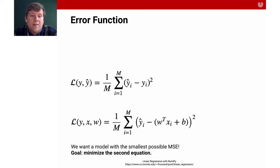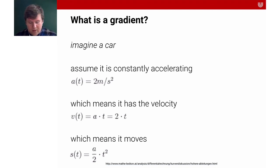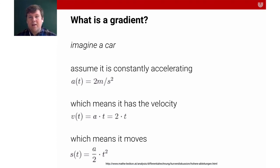To minimize the loss function we take a gradient. Just imagine a car: there's an acceleration function a = 2 meters per second squared. The acceleration changes the velocity, which we define as v(t) = 2t. The velocity then changes our distance traveled.